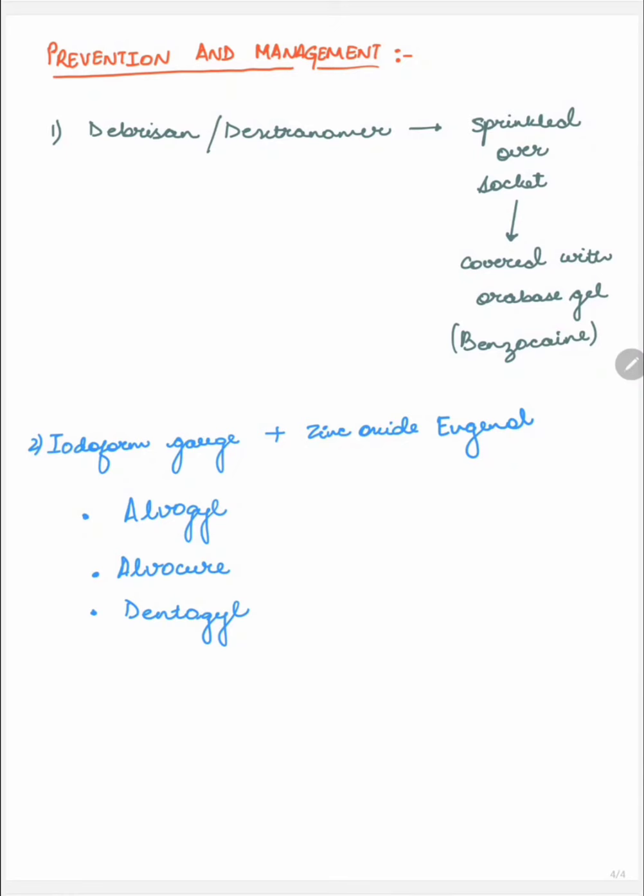Now the prevention and management of dry socket. After the extraction of a tooth, it is important to put some hemostatic agent such as gelatin foam, which comes under the name of Abgel in the markets. This will definitely help in the formation of blood clot.